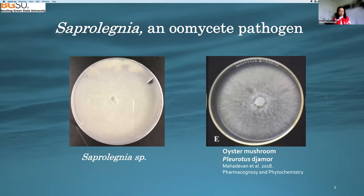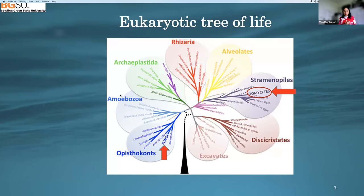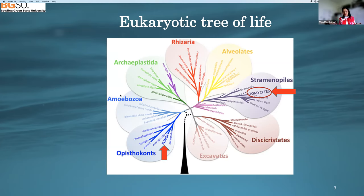Saprolegnia was classified as a fungus because when you grow them, they look very similar to a fungus. The one to the right was isolated from oyster mushroom, and the one to the left is the Saprolegnia we isolated in our lab. Now, because of advances in DNA technology, we use DNA sequencing in combination with some detail inside the organism to help us with taxonomy. If you look at the tree of life here, you will see that oomycetes and fungi are actually at opposite sides of the tree. In fact, oomycetes are more similar to plants, and fungi are more similar to us, humans.